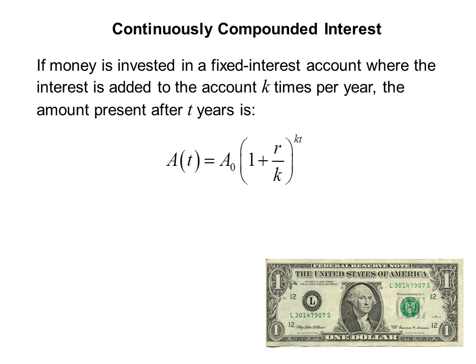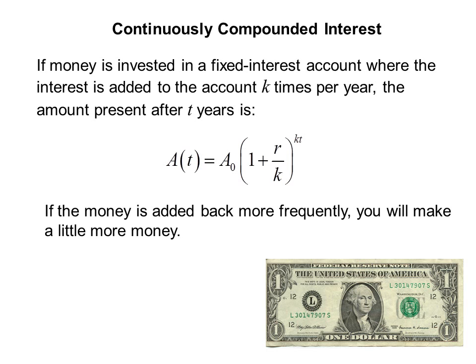If money is invested in a fixed interest account where the interest is added to the account k times per year, the amount present after t years is a of t equals a sub 0 times the quantity 1 plus r over k raised to the kt. If the money is added back more frequently, you will make a little more money.